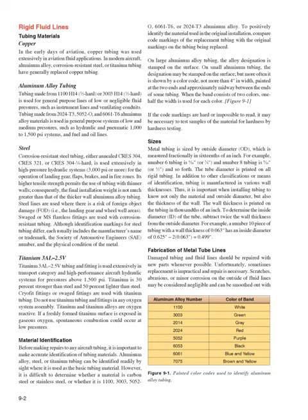Aluminum alloy tubing made from 1100-H14 (half-hard) or 3003-H14 (half-hard) is used for general-purpose lines of low or negligible fluid pressures, such as instrument lines and ventilating conduits. Tubing made from 2024-T3, 5052-O, and 6061-T6 aluminum alloy materials is used in general-purpose systems of low and medium pressures, such as hydraulic and pneumatic (1,000 to 1,500 psi) systems, and fuel and oil lines.